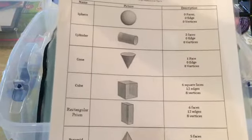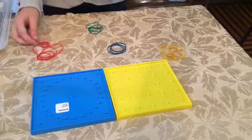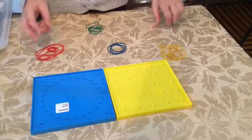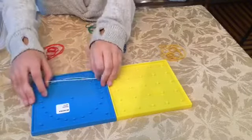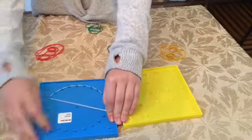Another game in the geometry kit are the geoboards. The first thing you can do is have the child sort the rubber bands by colors or by sizes. We're going to do by colors, sort all the different rubber bands by colors. Now using the different colors of rubber bands, you can have your child create shapes on the geoboard.